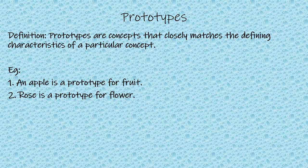The second example is: rose is a prototype for flower. We understood earlier that flower is a concept. The best defining characteristic, or the best defining example for a flower, is a rose. Hence, rose becomes a prototype for flower.